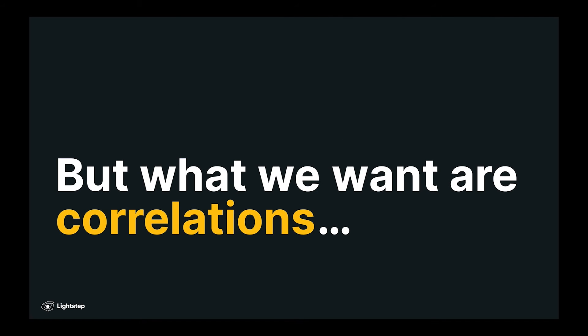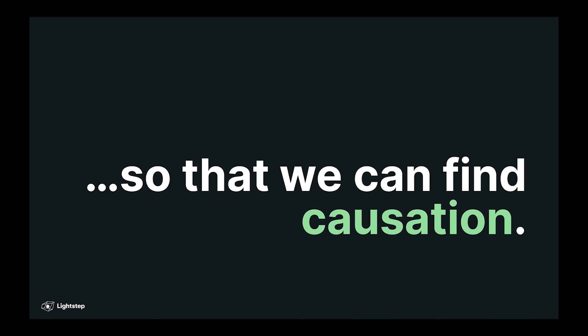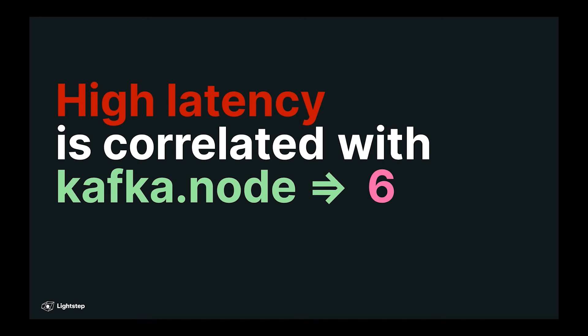But here's the thing. We don't just want metrics. What we want are correlations. We want to know what caused the alert. So for example, we don't just want to know that there's high latency. We want to know that that latency is correlated with a specific Kafka node. That would tell you a lot of information about where you needed to look.